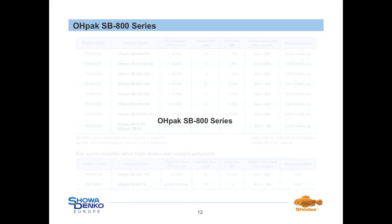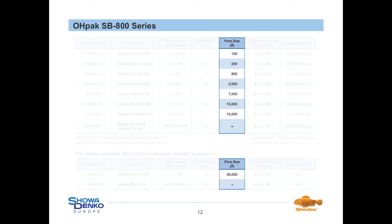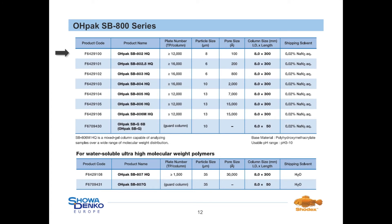The OH-PAC SB-800 column series offers a wider variety of pore sizes than the Protein KW column series. Therefore the SB-800 series can cover a broader molecular weight range. For example, the OH-PAC SB-802HQ column covers a low molecular weight range from 100 to 4,000 Dalton with a maximum pore size of 100 angstrom. In contrast, the OH-PAC SB-806HQ has a maximum pore size of 15,000 angstrom and is able to cover a range from 100,000 Dalton up to an estimated value of 20 million Dalton. For ultra-high molecular weight polymers, the use of the OH-PAC SB-807HQ is recommended. Beside single gel columns, also a mixed gel column can be offered. The OH-PAC SB-806M consists of different gels and therefore shows good linearity over a broad molecular weight range.